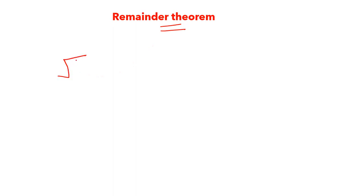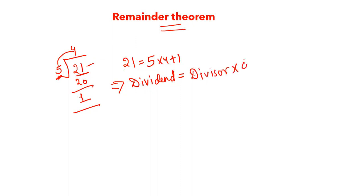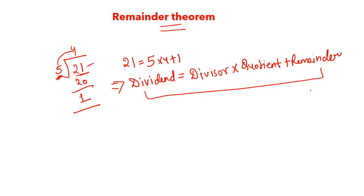Let's understand what Remainder Theorem is. For example, if you divide 21 by 5, you get 4 as quotient and 1 as remainder. So 21 can be written as 5 × 4 + 1. That is the remainder theorem. The formula is: Dividend = Divisor × Quotient + Remainder. We are already aware of this formula, and some questions will be solved based on this formula only.